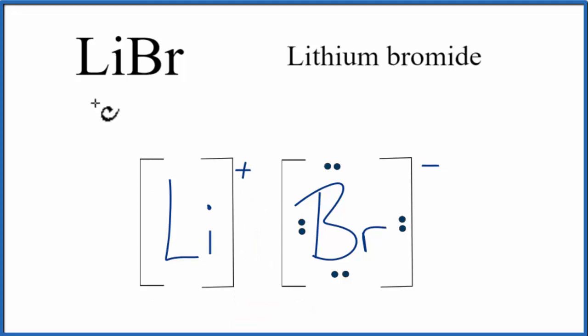That makes this the Lewis structure for LiBr, lithium bromide. Note that this is what we call a formula unit. We have many of these in a regularly repeating pattern in ionic compounds. That's called a crystal.